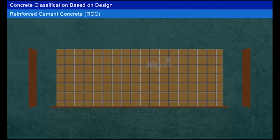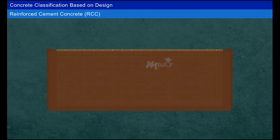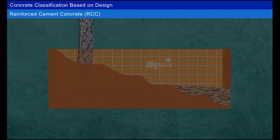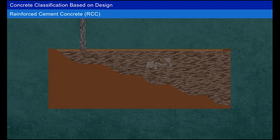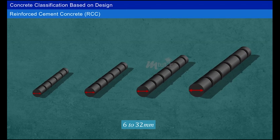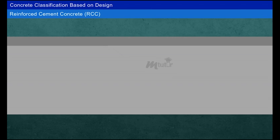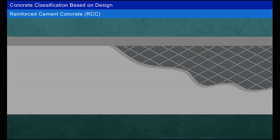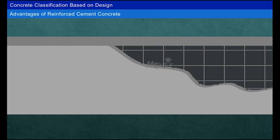Reinforced cement concrete (RCC) consists of cement concrete structures in which steel rods or bars are embedded to counteract tension loads that cannot be handled by concrete alone. Standard steel bars of 6 millimeters to 32 millimeters in diameter are used as reinforcements. Sometimes mesh-type steel fabric and expanded metal are used for casting concrete walls.